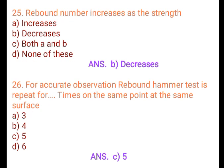Question 25: Rebound number increases as the strength: A. Increases, B. Decreases, C. Both A and B, D. None of these. Answer: B. Decreases. Question 26: For accurate observation, rebound hammer test is repeated a number of times on the same point at the same surface.